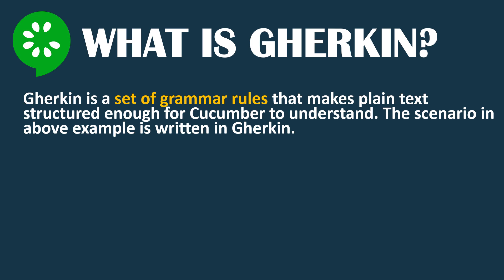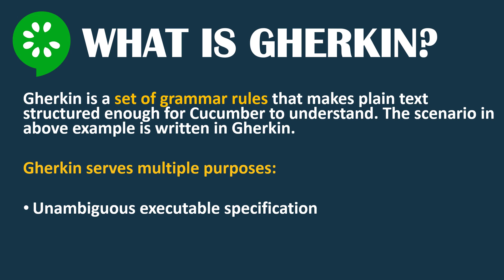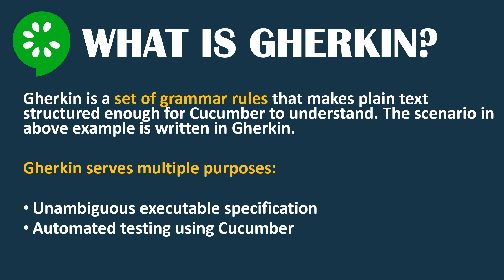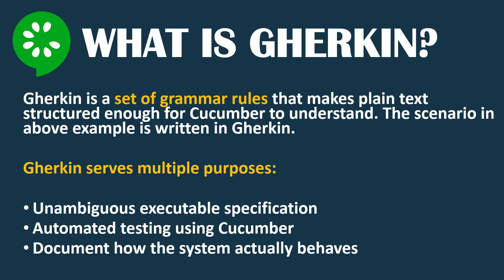We will learn those Gherkin rules practically step by step in upcoming tutorials. The key idea is that we write requirements in plain English that follow a set of grammar rules known as the Gherkin language. Gherkin serves multiple purposes: first, it identifies unambiguous executable specifications; second, it enables automation testing using Cucumber; and third, it documents your system and how it will behave.